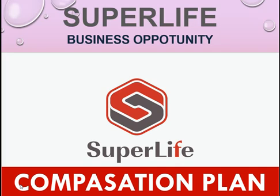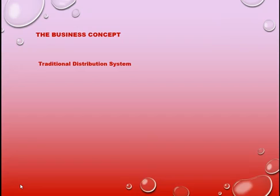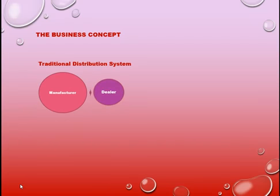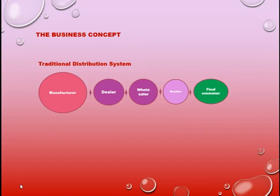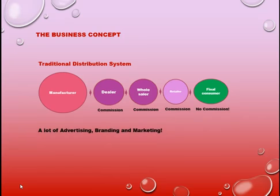Before I go to the main business, I want to show you something about traditional business distribution. A manufacturer traditionally used dealers to move products from the company to the consumer. Dealers use wholesalers, wholesalers use retailers, and retailers take the product to the final consumer. In this way of distribution, commissions were earned by dealers, wholesalers, and retailers, while the consumer just consumed the product. The company invested heavily in advertising, branding, and marketing.